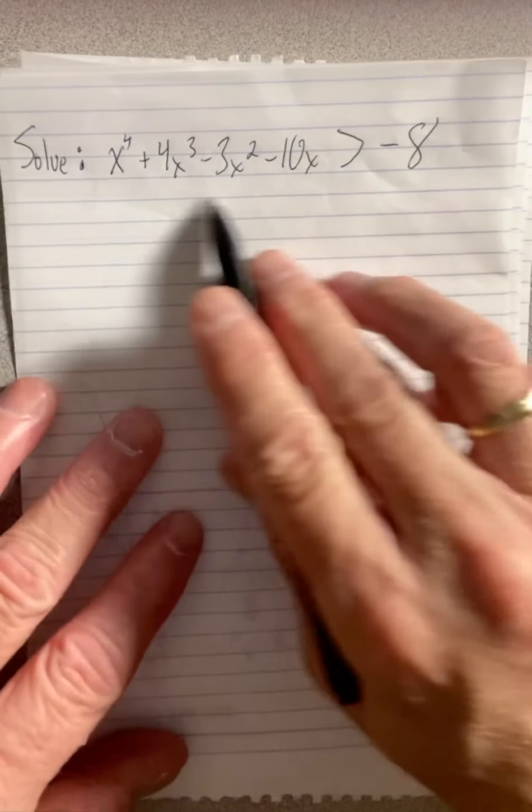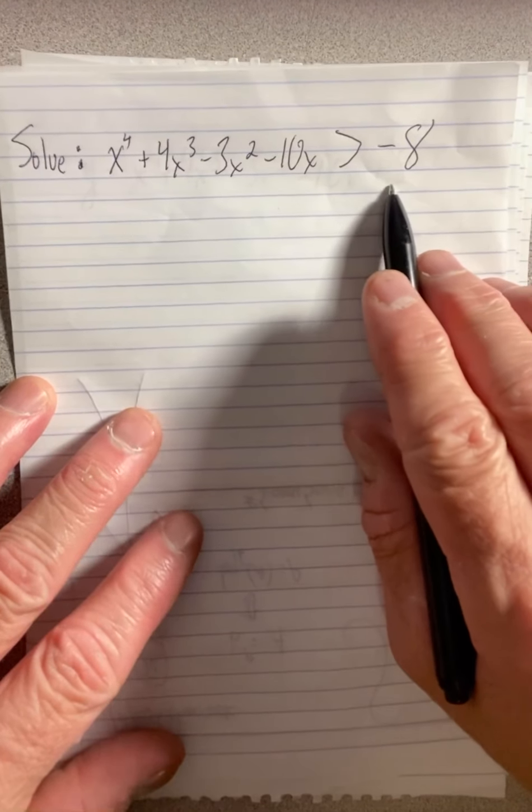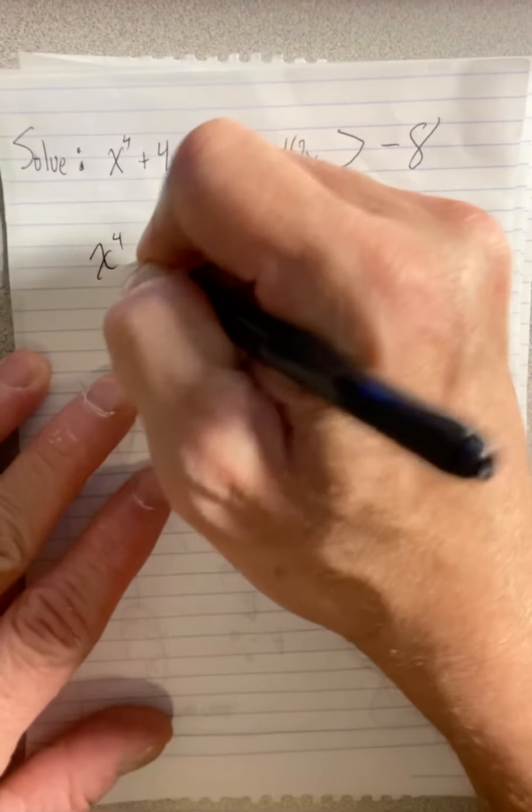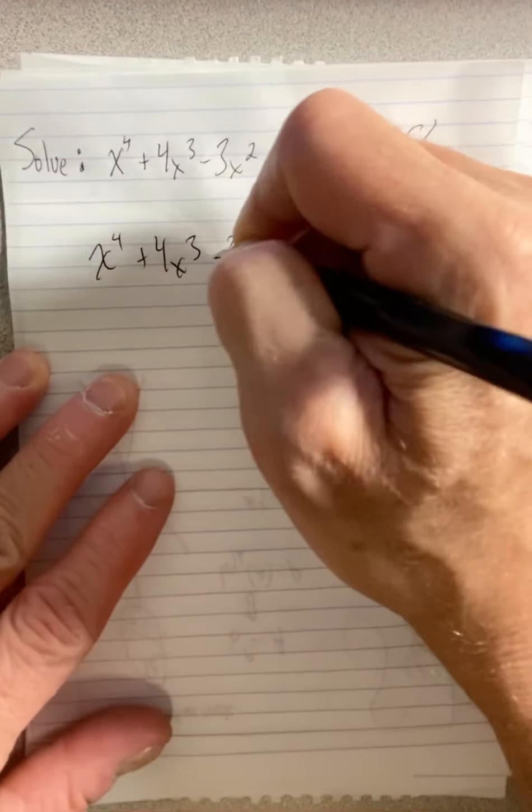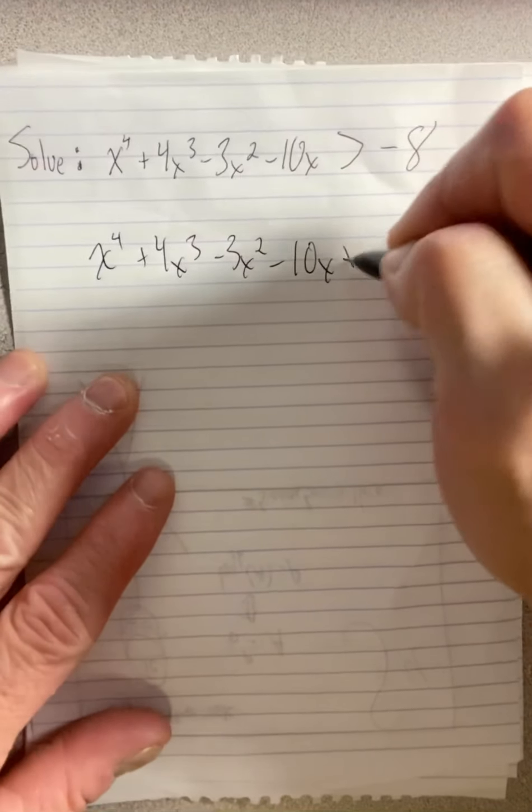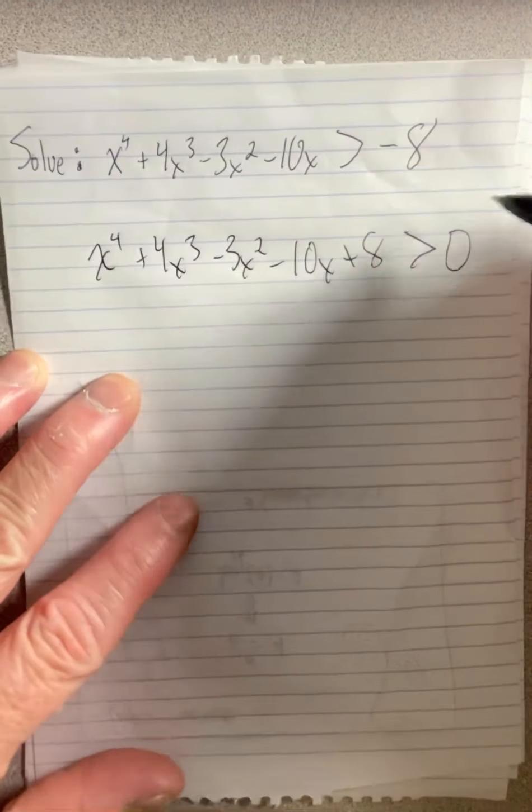The way I'm going to handle it, if I have a polynomial over here, is for sure going to be one side to be zero. So the very first thing I do is set this over here. We have a plus eight now and we have a zero on this side.